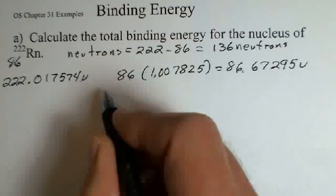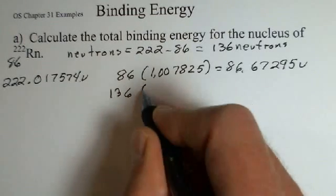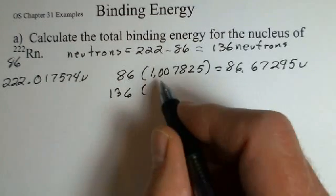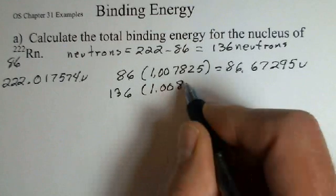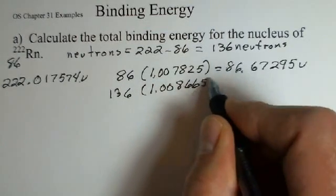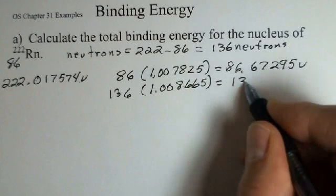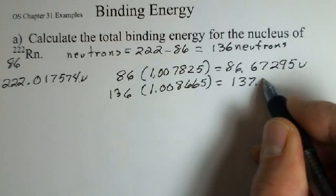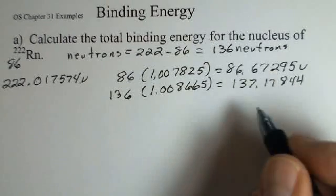And we have 136 neutrons. Again, if you go to a chart and look the mass of the neutron up in atomic mass units, 1.008665, slightly more than the proton. And multiplying, 137.17844. You ought to check that yourself.